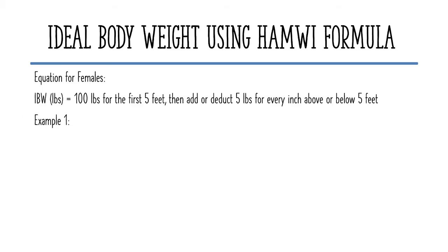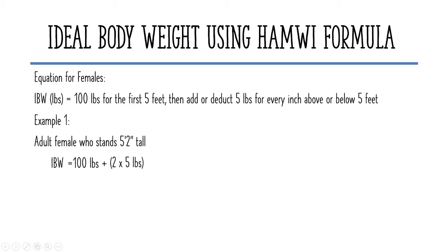Let's have our first example: an adult female who stands 5 feet and 2 inches tall. Just as we did with the males, we multiply the excess inches by 5 pounds. So 5 pounds times 2 equals 10 pounds. Then, 100 plus 10 pounds equals 110 pounds.